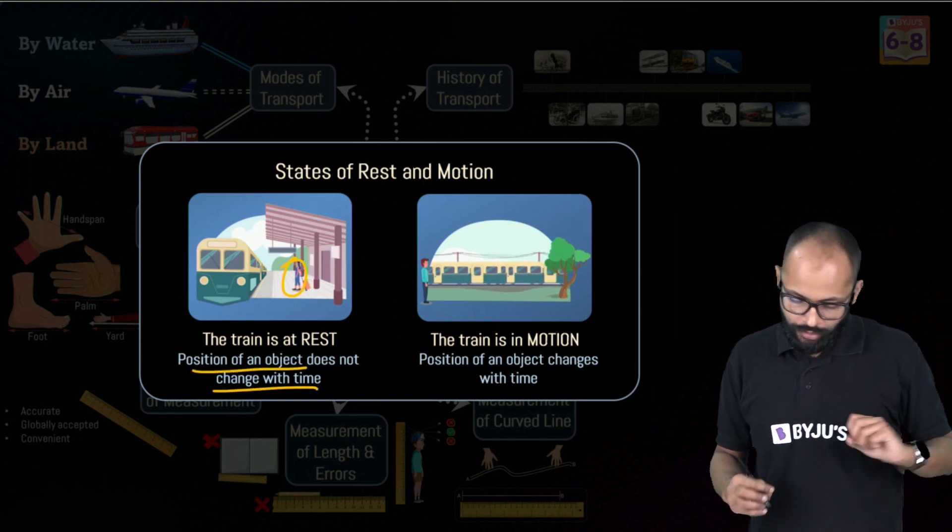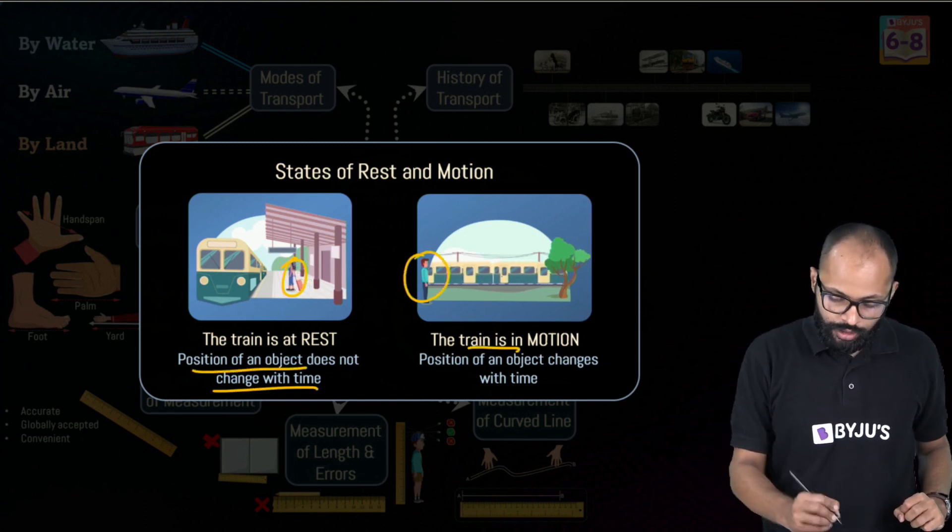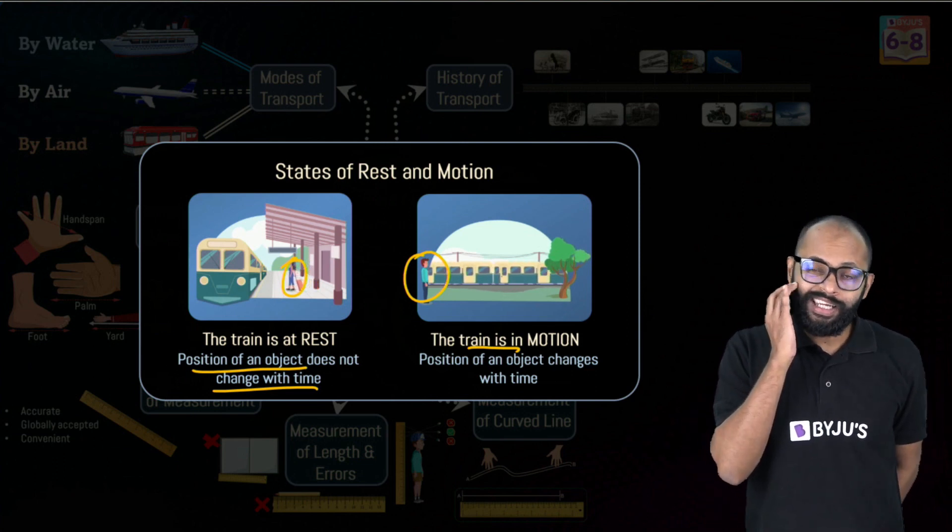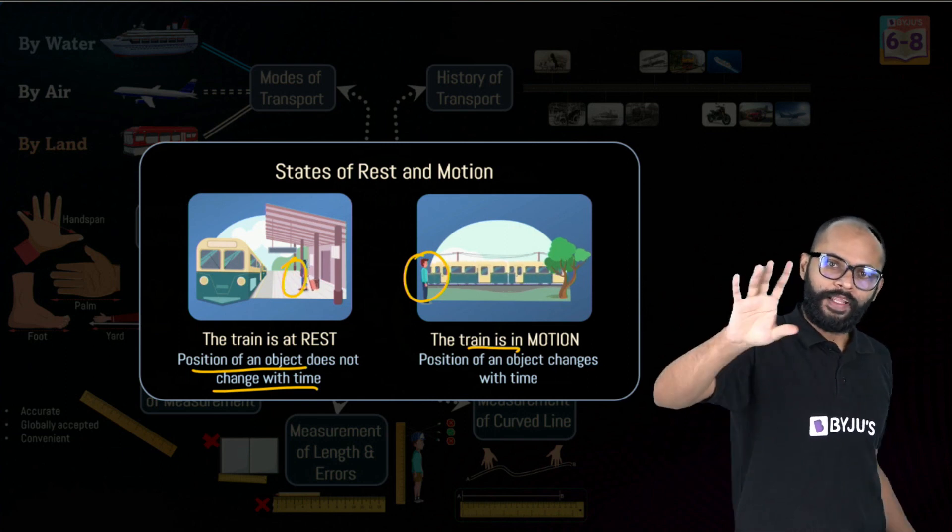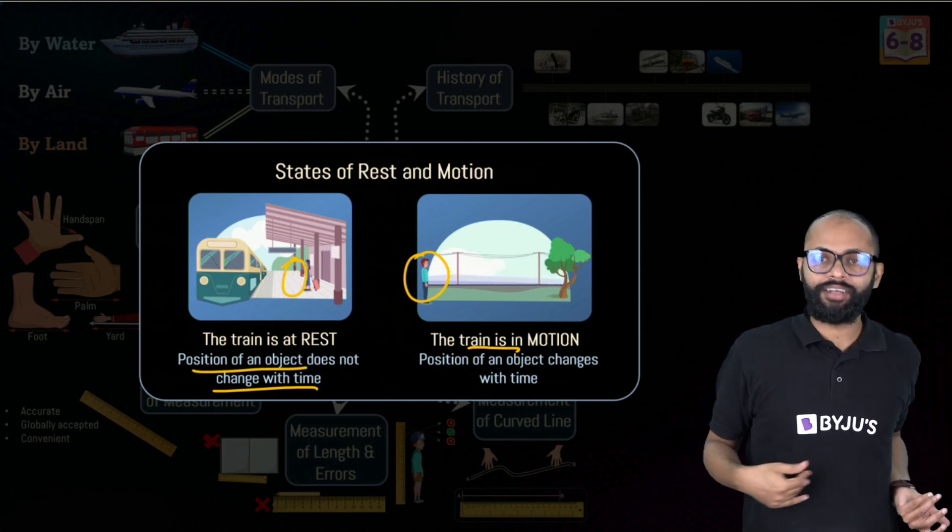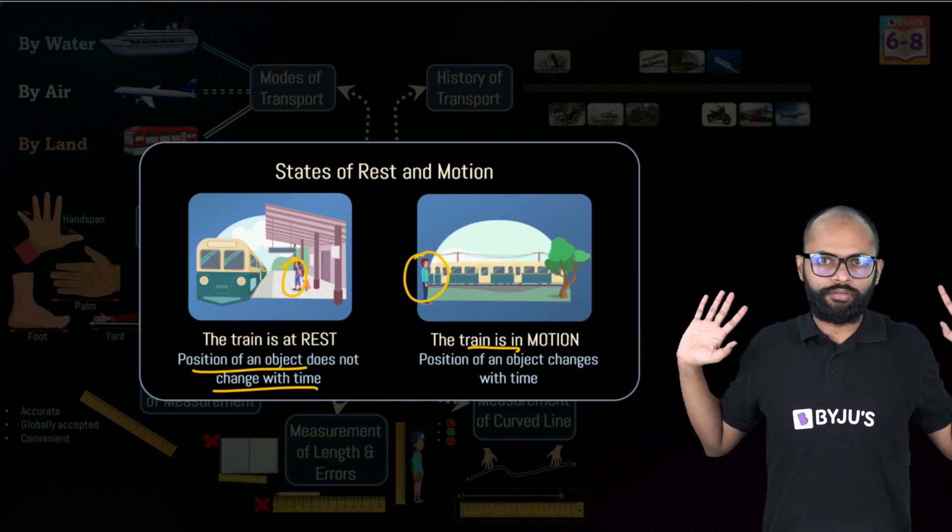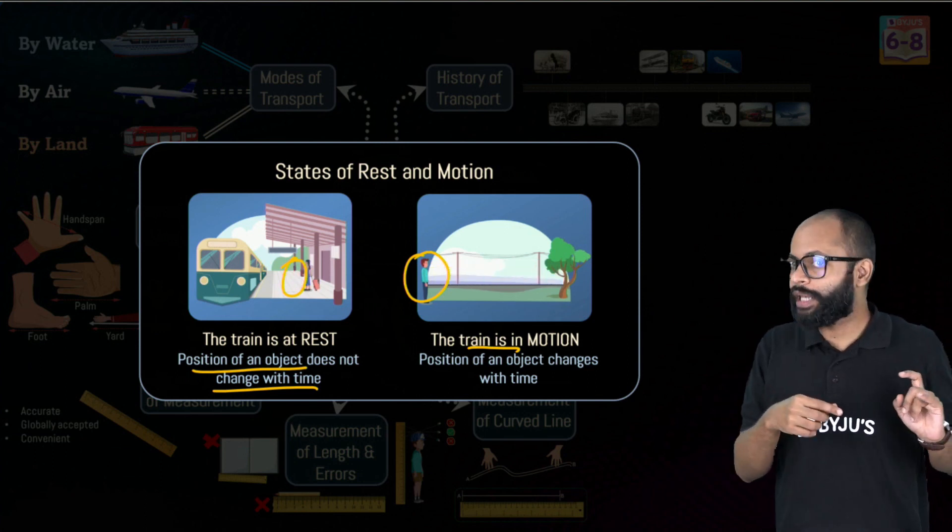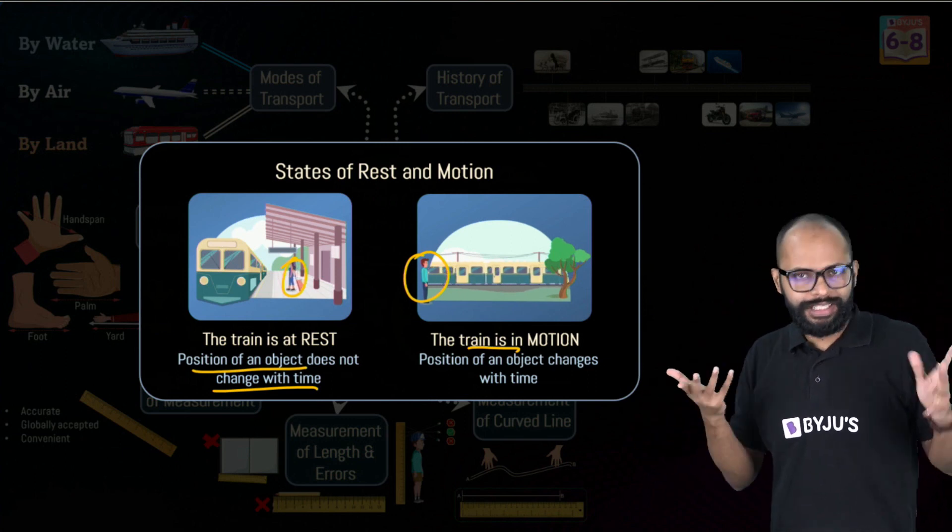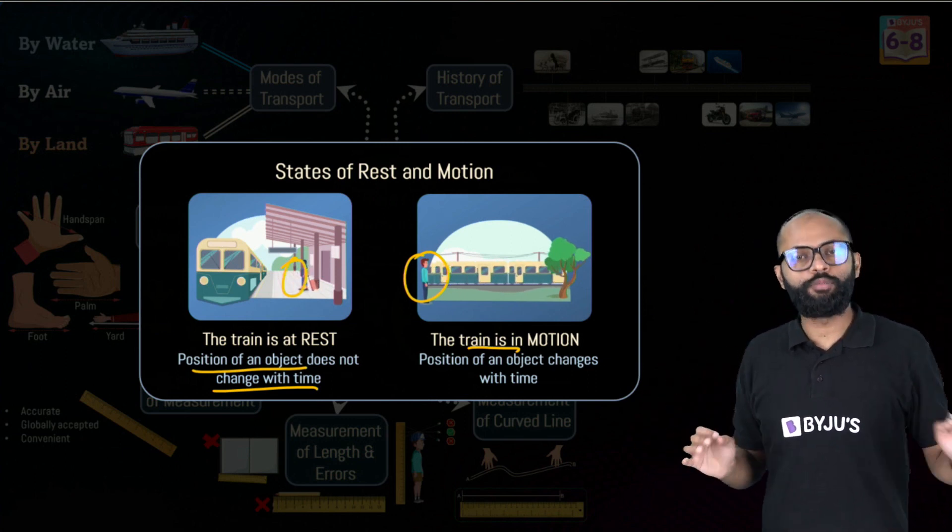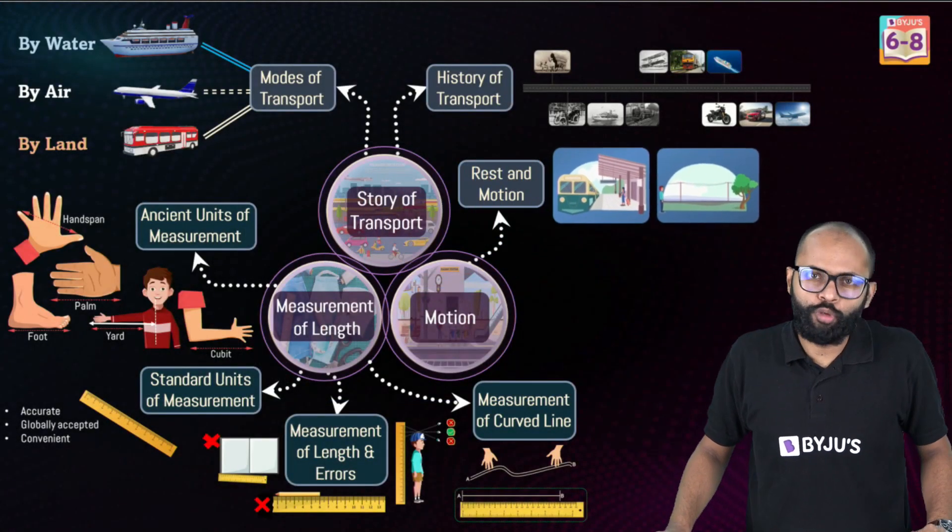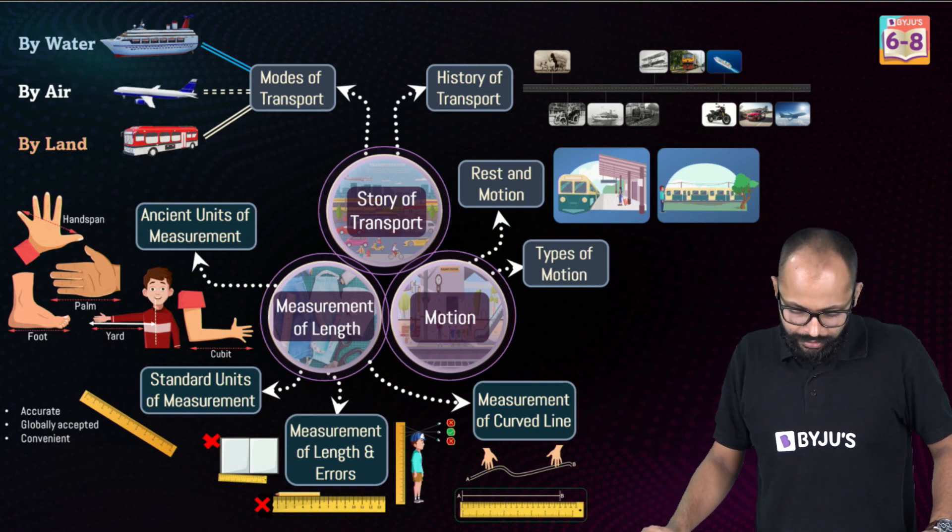The train is in motion with respect to this boy. Why? Because the boy is on the ground, the ground is at rest. The train is moving, so for the boy the train's position is changing. The person inside the train, they will see train is not moving, I am at rest. But that boy outside who is standing on the ground, he is moving backward, his position is changing. It depends on observer. The motion is not absolute, it is relative. If position changes there is motion, if position stays the same there is rest.